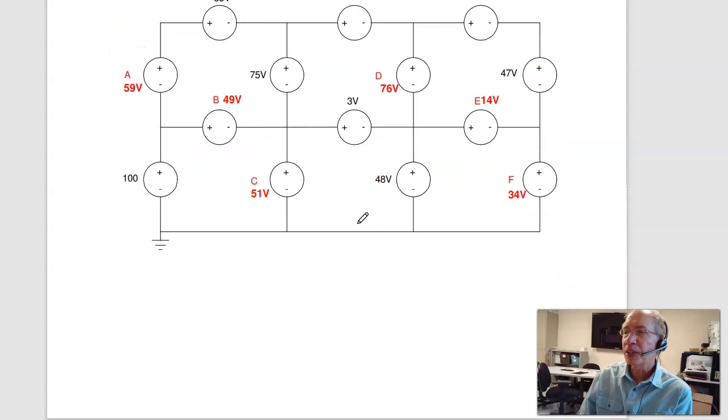The second problem is conservation voltage. Going around any closed path, the voltages have to add to zero. So the trick is to find a closed path where there's only one unknown, like right here. If I go around this path, I wind up where I started. The convention I'll use, if I hit the minus sign first, I'll subtract. If the plus sign first, I'll add. So I get minus C plus 3 plus 48 equals zero. One equation, one unknown. Solve for C. I get 51 volts.